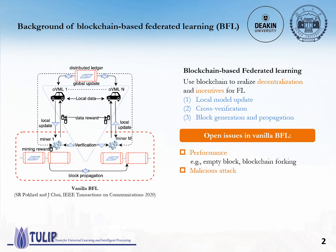Second, Vanilla BFL records all local gradients to the blockchain, which means if a client — which may be malicious — is curious about the local gradients of other clients, it can easily read this information from the blockchain. So in this case, Vanilla BFL is actually a white box. This is very dangerous because there has been a lot of work proving that malicious clients can launch a variety of privacy attacks, for example, member inference attacks and even model inversion attacks. Also, Vanilla BFL does not verify whether a local gradient is fake. All these things make it difficult to resist malicious attacks.